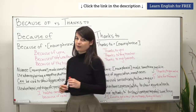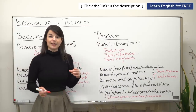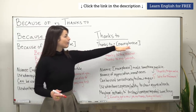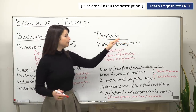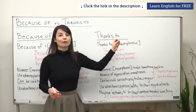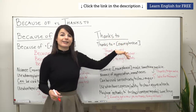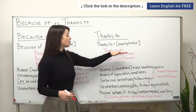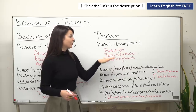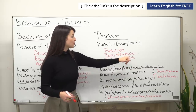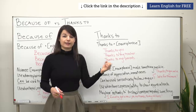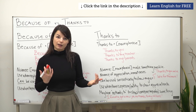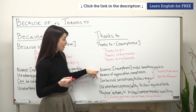Now let's look at 'thanks to.' Just as with 'because of,' we introduce a noun phrase after the expression — 'thanks to' plus some noun phrase, where the noun phrase is the reason or cause of the situation or state. For example: 'thanks to you,' 'thanks to my teacher,' 'thanks to my parents.' Here, 'you,' 'my teacher,' and 'my parents' are the noun phrases that introduce the reason or cause of the state or situation.